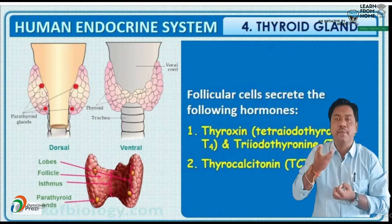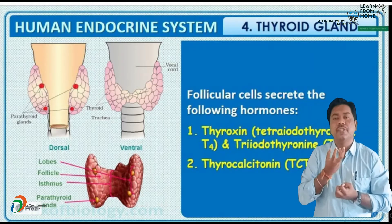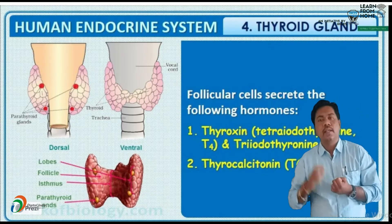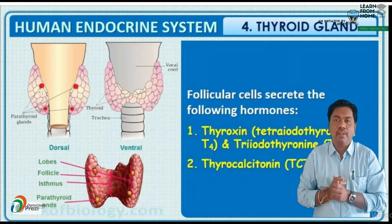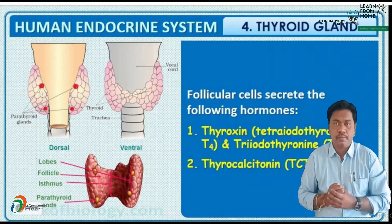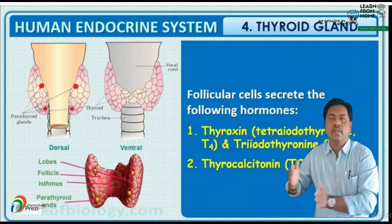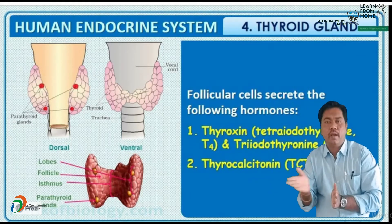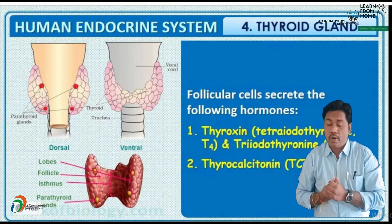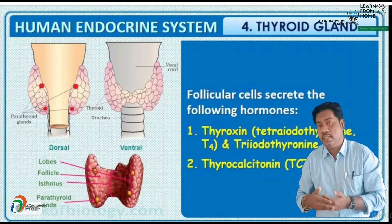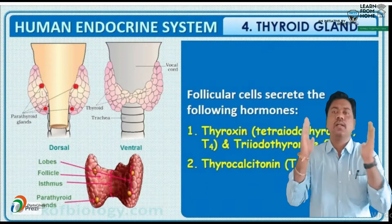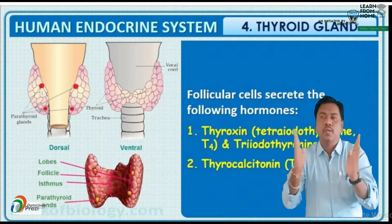The second hormone produced by the follicular cells is thyrocalcitonin, simply known as TCT. It is a protein hormone. What are the functions of T3 and T4 hormones? They regulate our basal metabolic rate (BMR). They also influence the physical, mental, and sexual development of the human body.